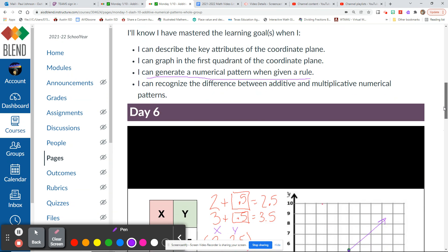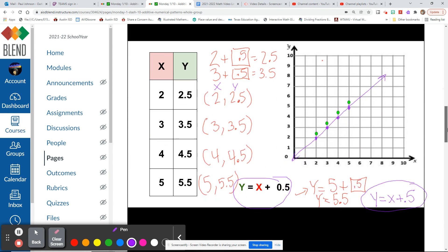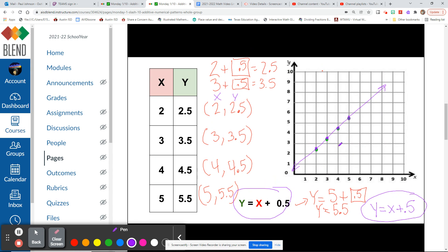Tomorrow, or later this week, we'll be looking at multiplicative numerical patterns as well. So today is additive patterns for adding. This is what an additive pattern looks like on a graph. You just use your table to help you find that pattern: y equals x plus 5 tenths.